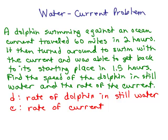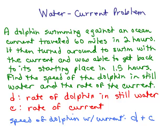So let's let d represent the rate of the dolphin in still water and c be the rate of the current. So just keep in mind that if the dolphin is going with the current, the speed of dolphin with the current, it means he gets a little boost.